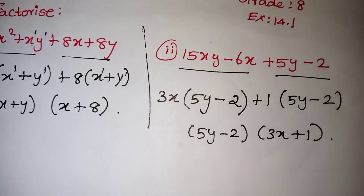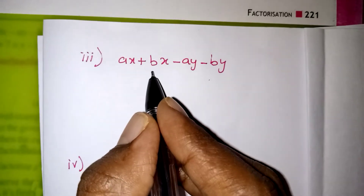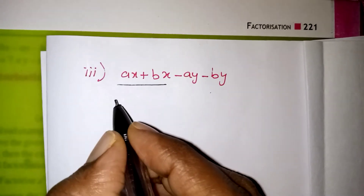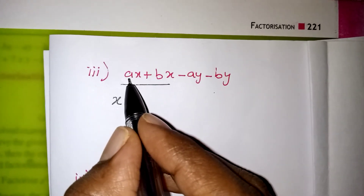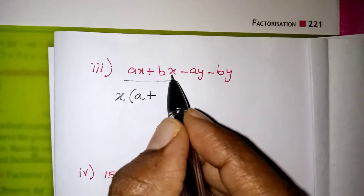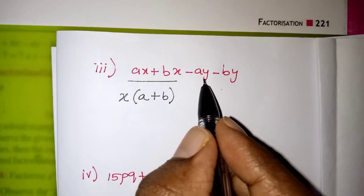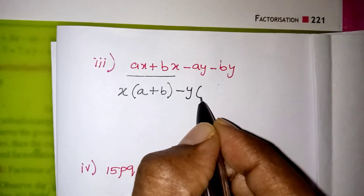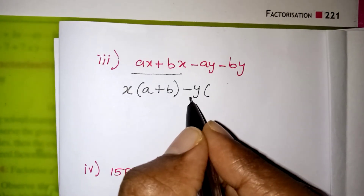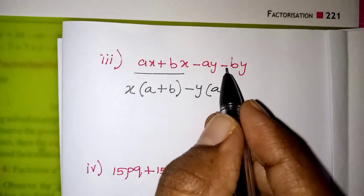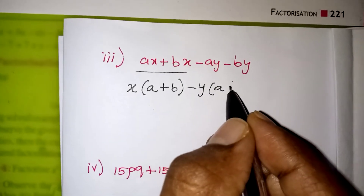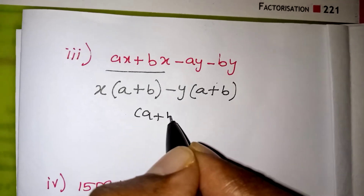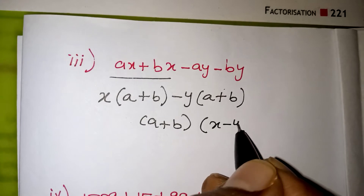Now the third problem: ax + bx − ay − by. From the first pair, x is common in ax and bx, so take x outside giving (a + b). For the second pair, −ay − by, both minus and y are common, so take −y outside. Since minus went outside, the signs inside change, giving (a + b). Now (a + b) is common in both groups.